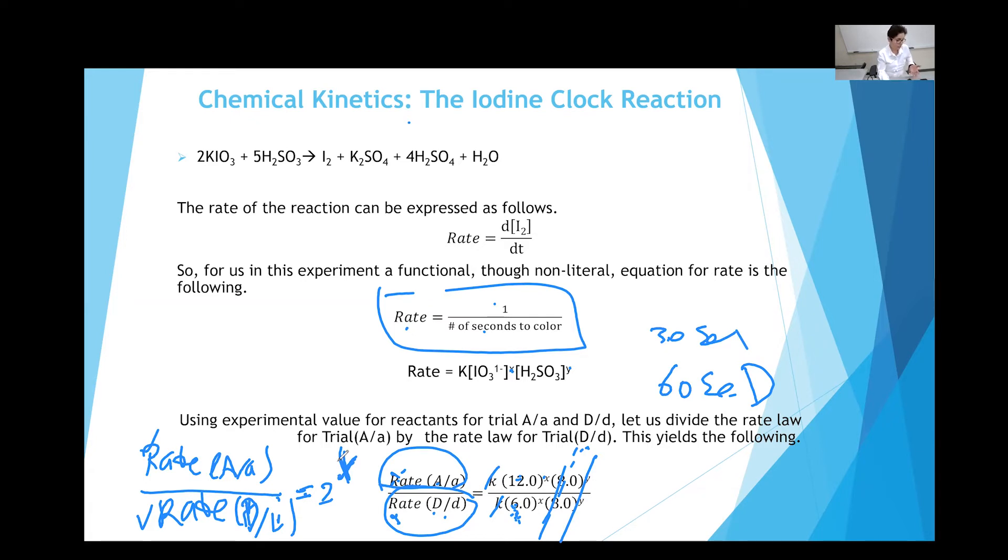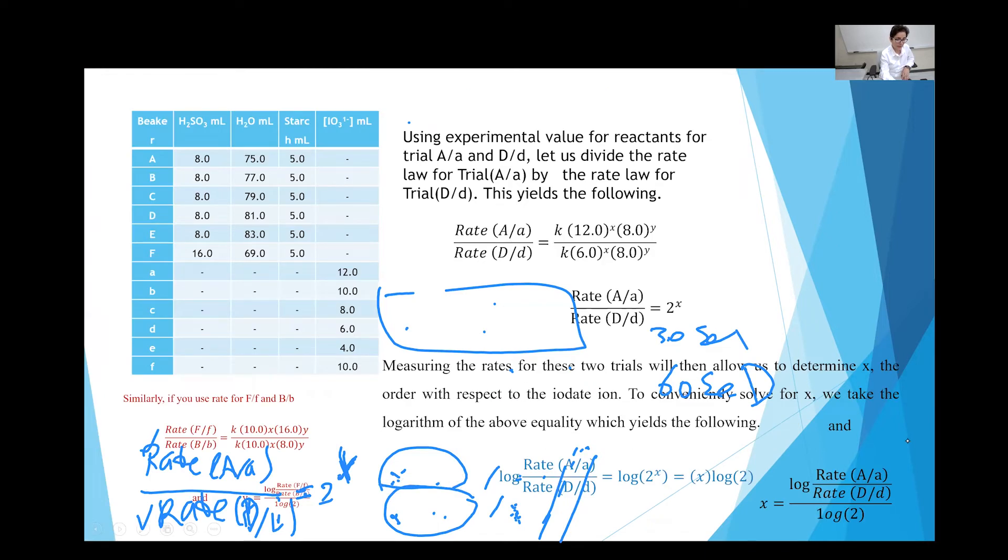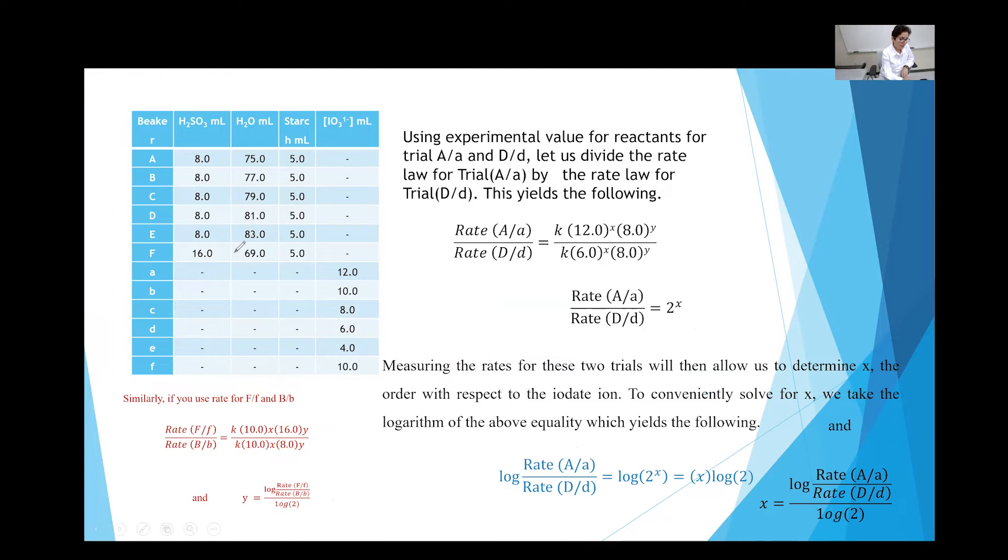But the experiments that you pick, you shouldn't get like a fraction. So if you get like 0.9, change it to one or round it up to one. That could be due to some experimental error. So you're getting whole numbers for this experiment. Based on the design of this experiment, we are using like six different trials. And this was the A and D that we used. For A and D, the value of iodate is 12 and 6. We keep the sulfurous acid constant.